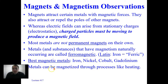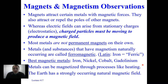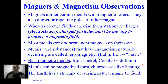Metals can be magnetized through processes like heating — you can set up very strong permanent magnets, especially utilizing heating. Earth also has a strongly occurring natural magnetic field. In the interior of the Earth, we hypothesize there are moving molten rock with charges — with magnetic metals as part of it — and so Earth produces its own naturally occurring magnetic field.